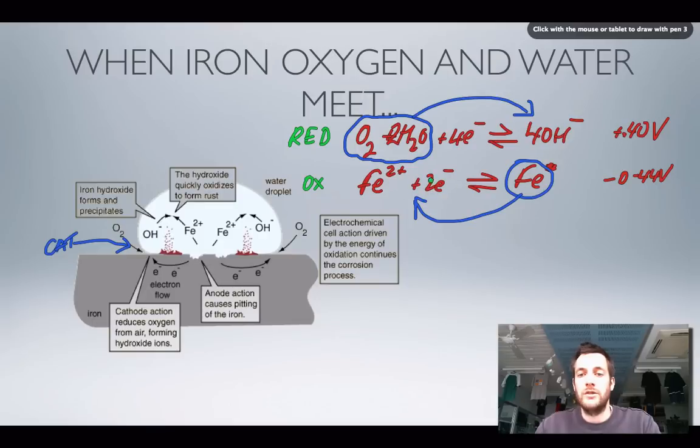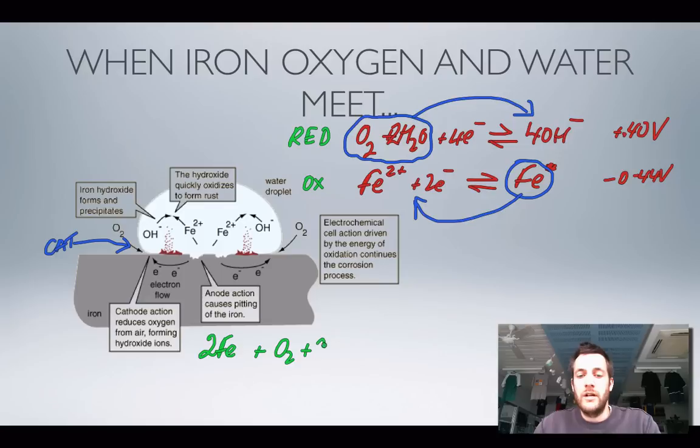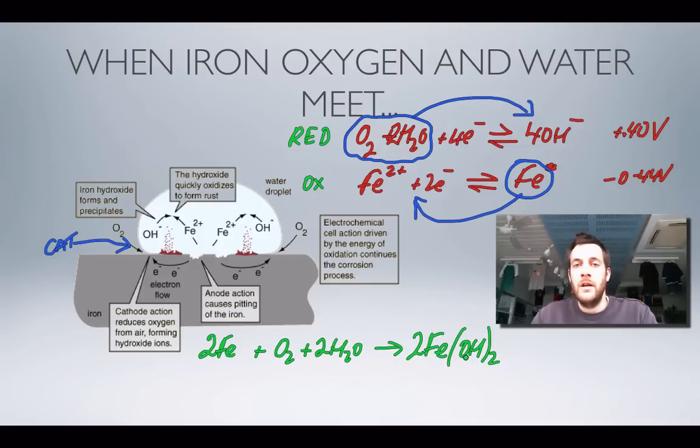If we just quickly write an overall equation for this, we've got two electrons here so let's double this equation so that we've got four. We've got 2Fe + O2 + 2H2O forming 2Fe2+ ions and 4OH- ions.